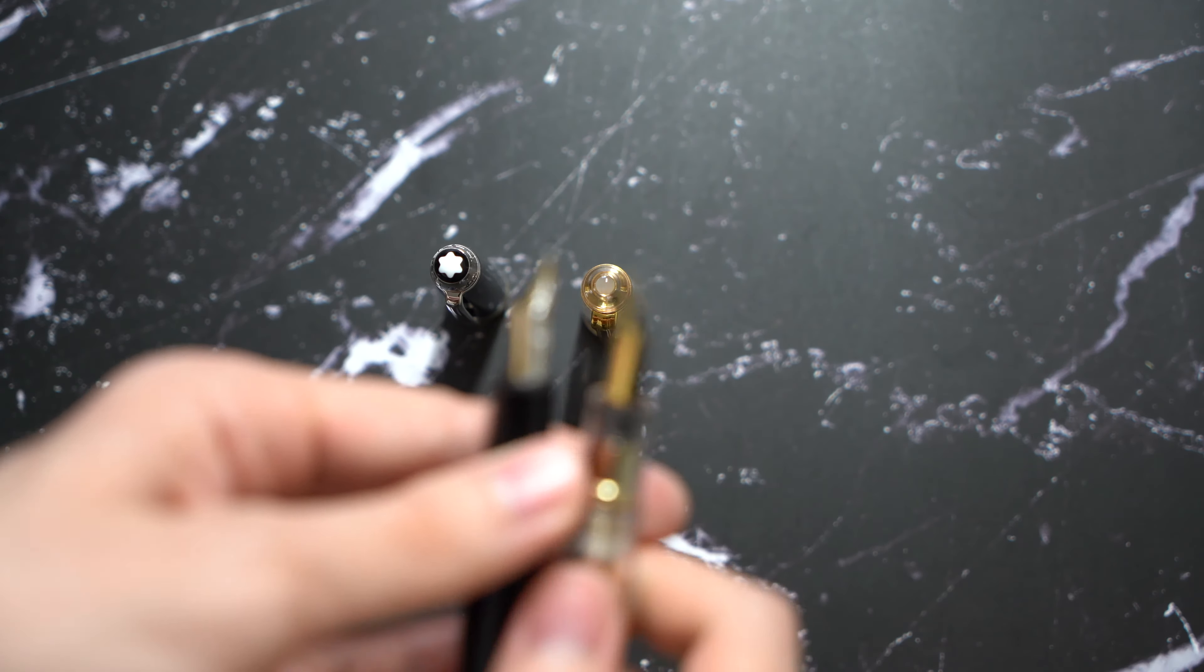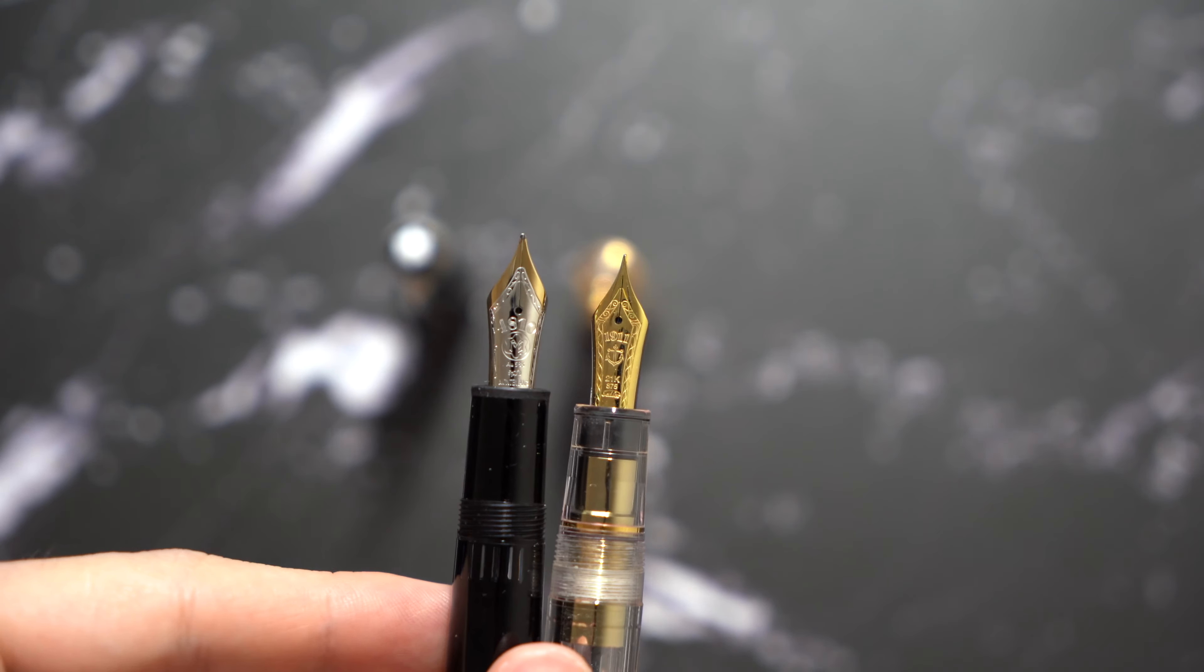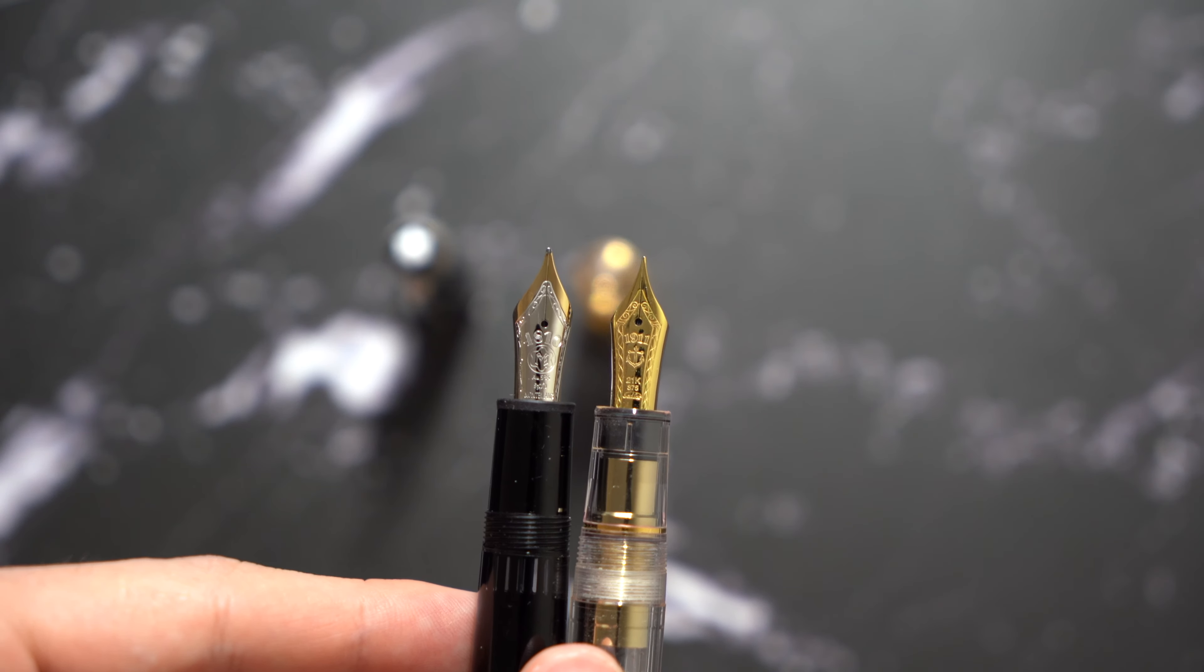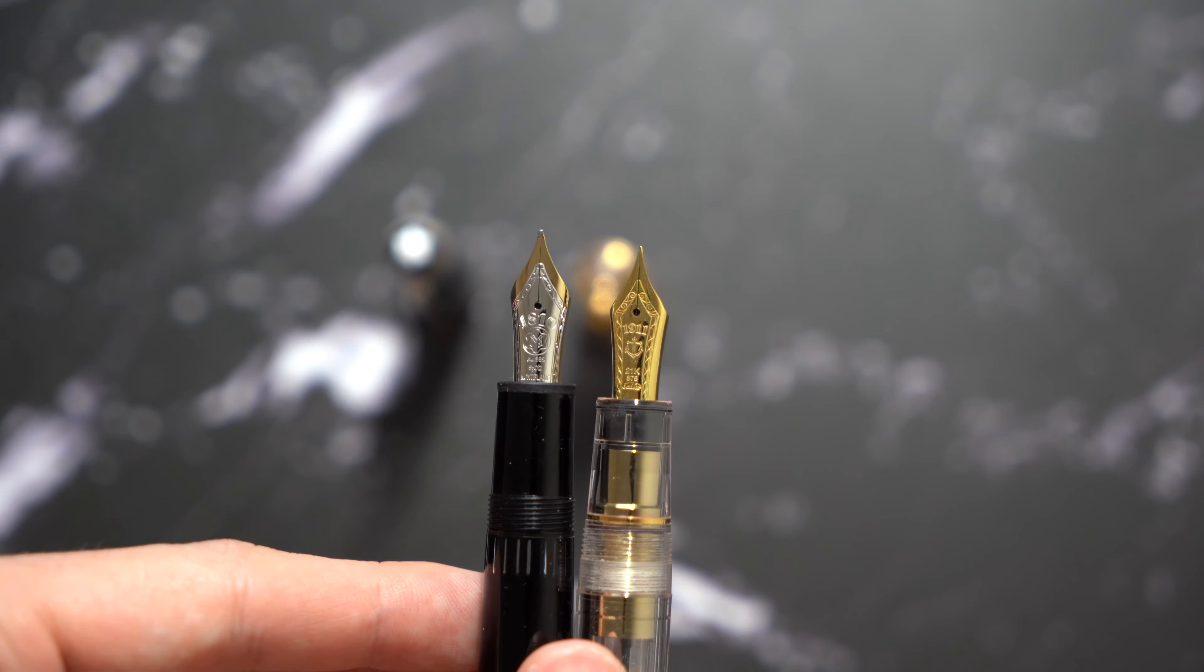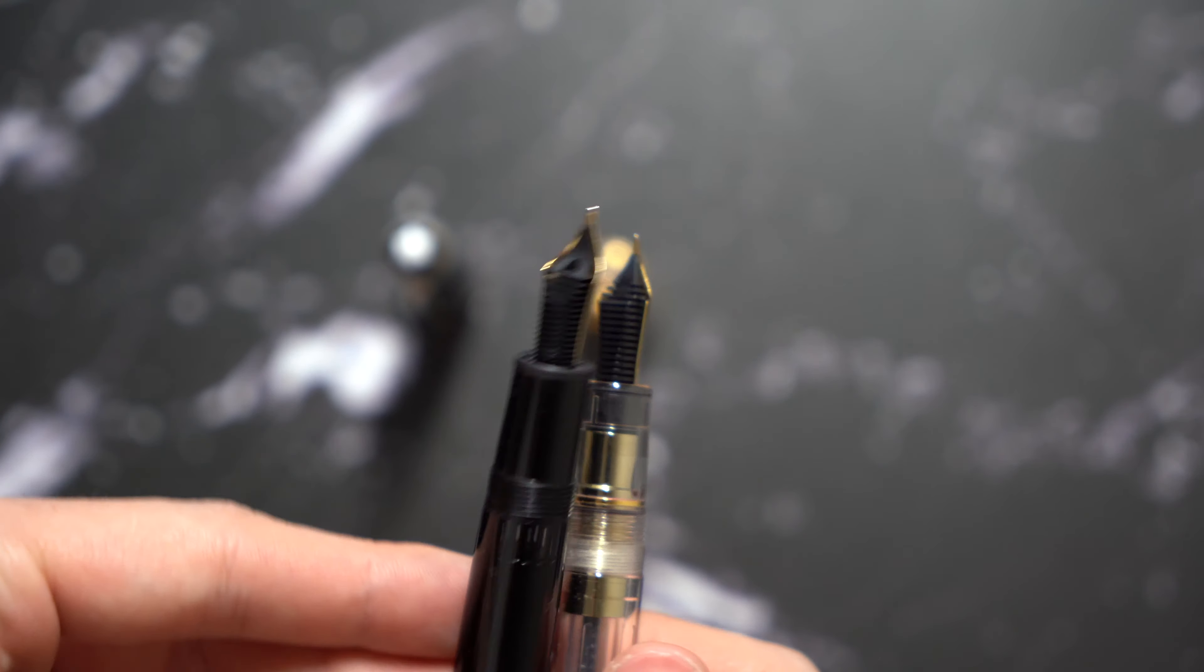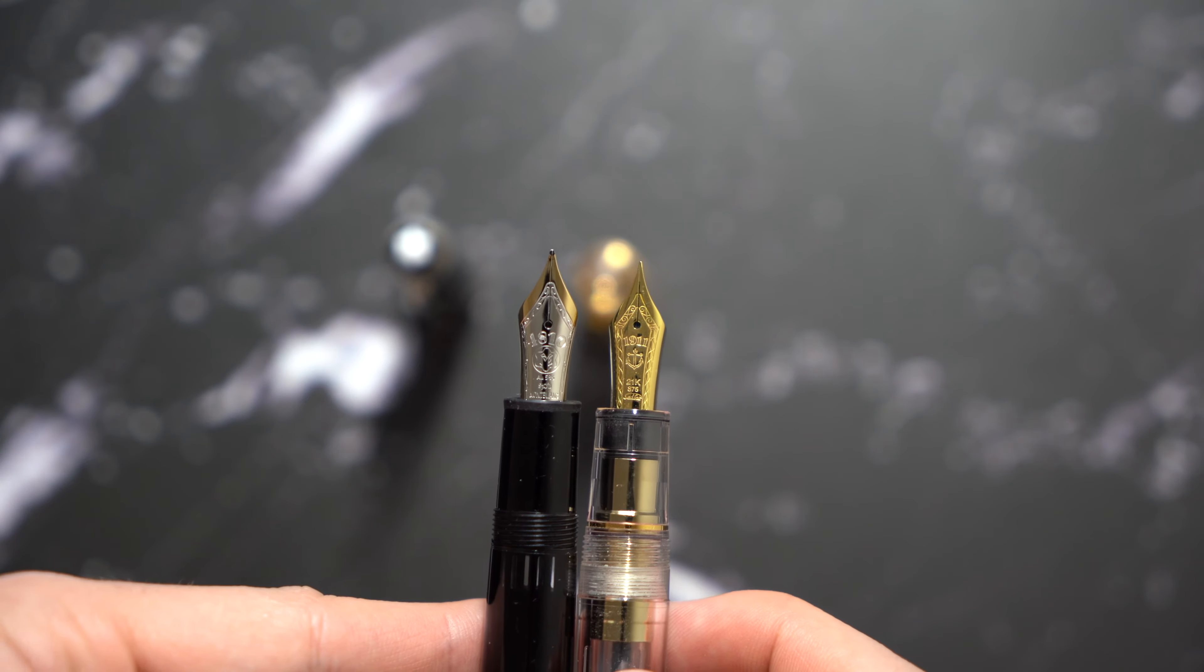Now in terms of the nib and the nib section, as you can see they have similar nib sections. Pretty much they don't flare out either and pretty much similar nib size as well. The biggest difference between these two essentially comes down to the filling mechanism.